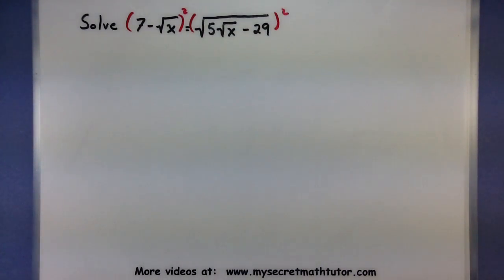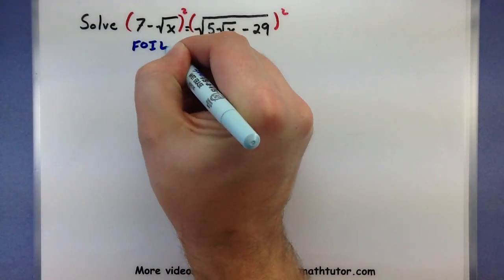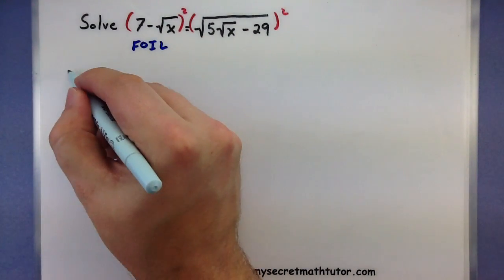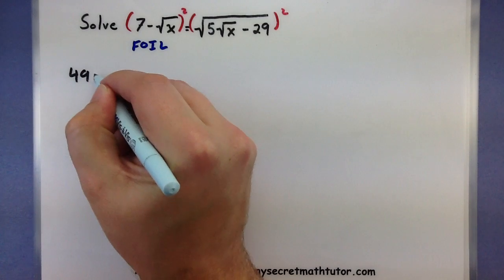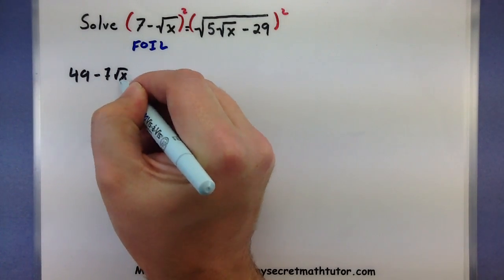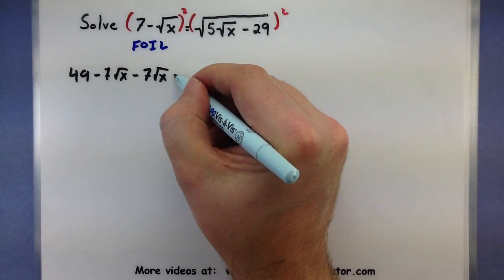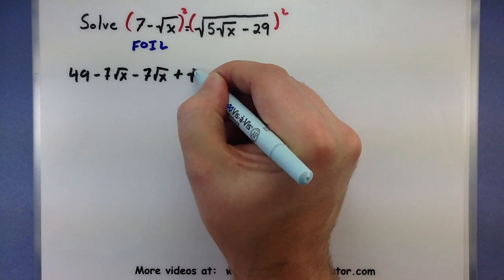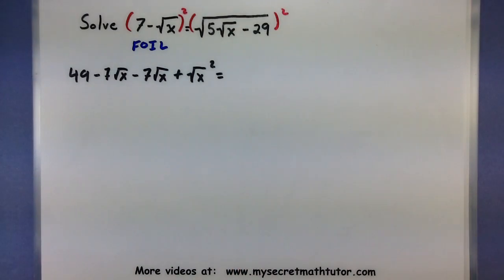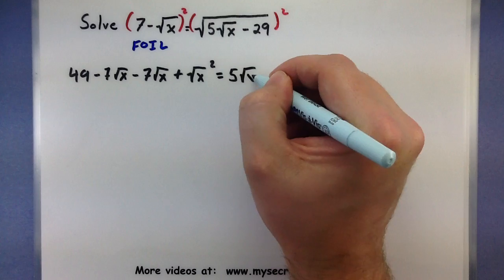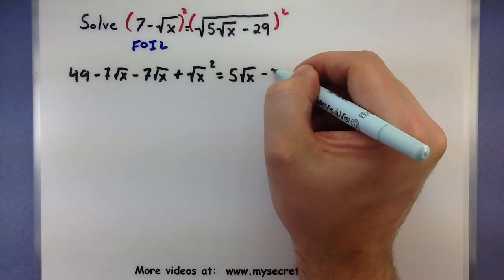Looks like on the left side, I have two terms. So, we'll be sure to foil that one out. Let's see what we've got. So, foiling out the left. 49 minus 7 square root of X minus 7 square root of X. Then we'll have a negative times a negative. So, positive square root of X squared. I think that takes care of all of the left side. Over on the right, the square and the square root will eliminate them. So, just 5 square root of X minus 29. Now, we're in much better shape.